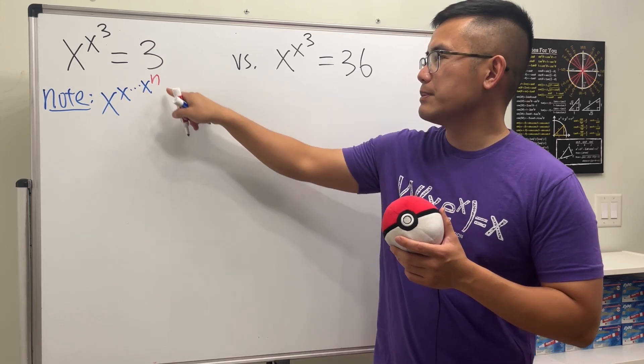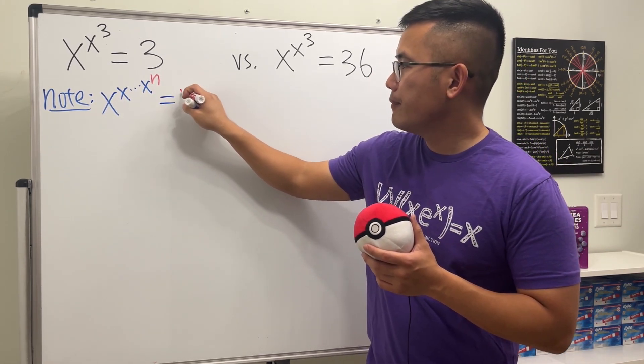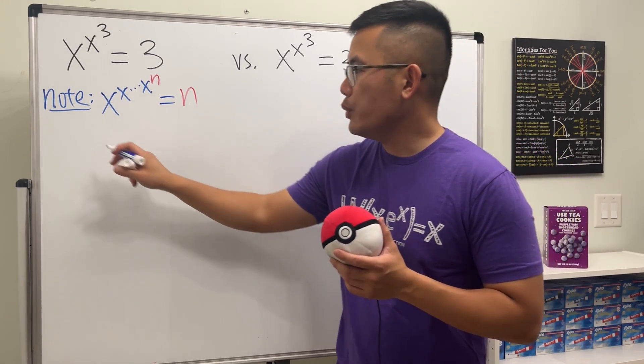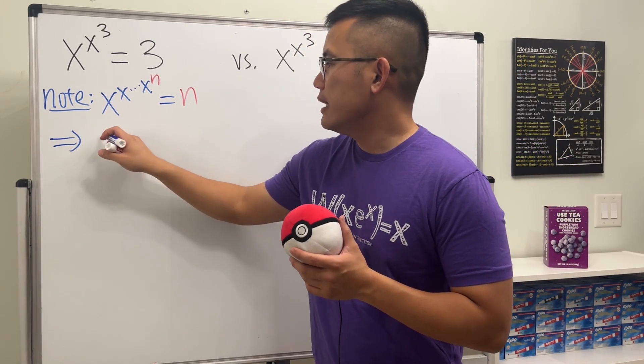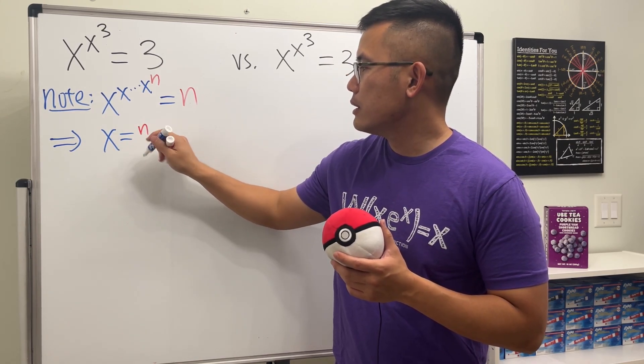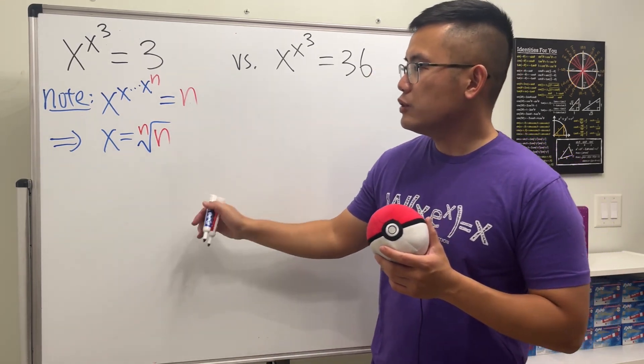And then the very last part has to be a power, let's call it to be n, and if this is equal to n. Well, this equation is really famous and will tell you that the answer is just x is equal to the nth root of n.